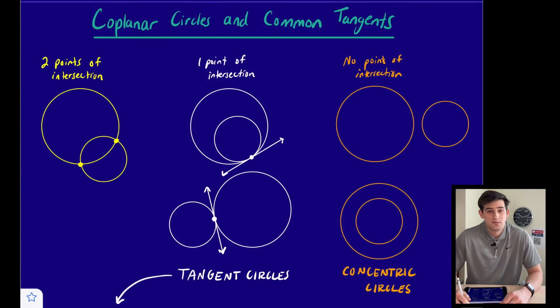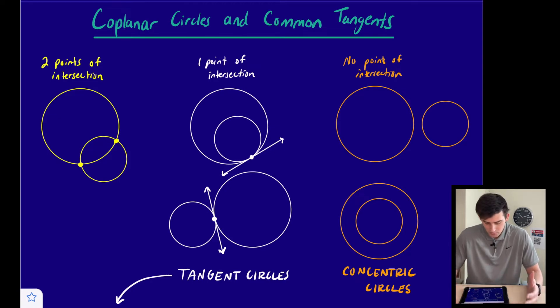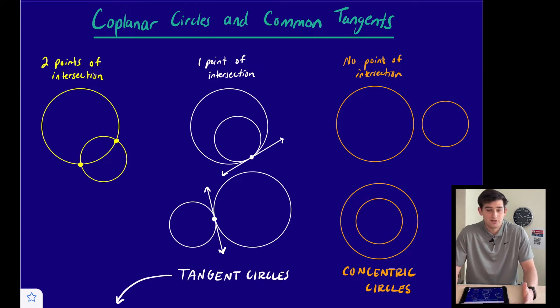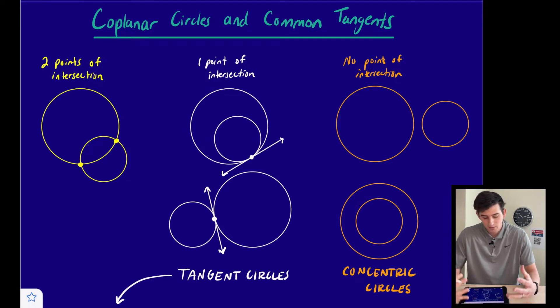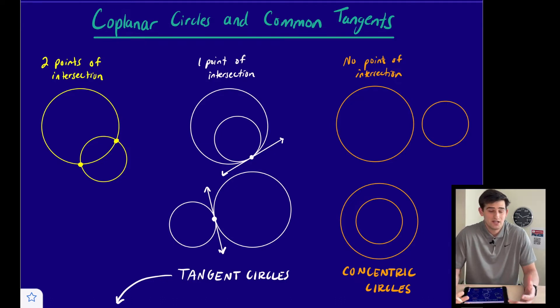Hello everyone. In this video we're going to talk about co-planar circles and common tangents. Co-planar circles are circles that are in the same plane, and when we have two circles in the same plane they could intersect in three different ways.